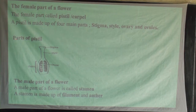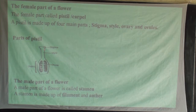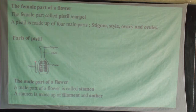The stigma is the part which receives pollen grains. The style holds the stigma in position and is also a passage of pollen grains from the stigma to the ovary. Then we have the ovary. So stigma, style, and ovary are the main three parts of the pistil.